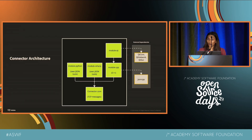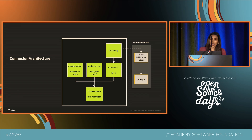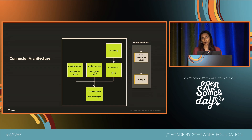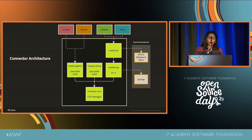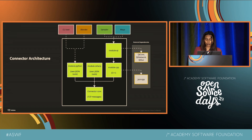Now let's see what the architecture looks like. We have a Connector Core module at the bottom, and different language wrappers on top of it. We support Python, C Sharp, C++, and Qt. There are some external dependencies on the right side needed to support some of the language modules. Each application will choose the most appropriate language module — Blender uses the Python module, whereas Sampler and Maya use Qt.